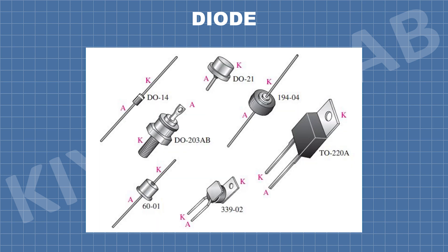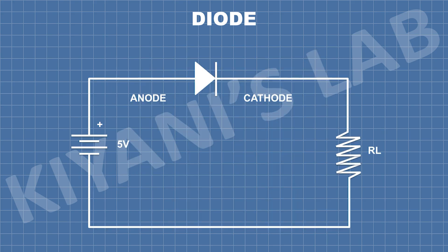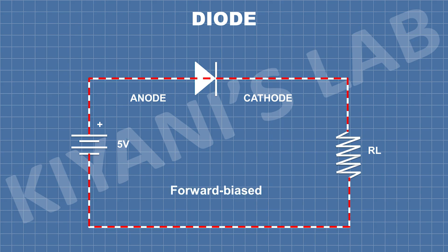Diode comes in different packages. If we connect the positive terminal of a battery to the anode of the diode and the negative terminal of the battery to the cathode of the diode, the diode becomes forward biased and current starts flowing through the diode.